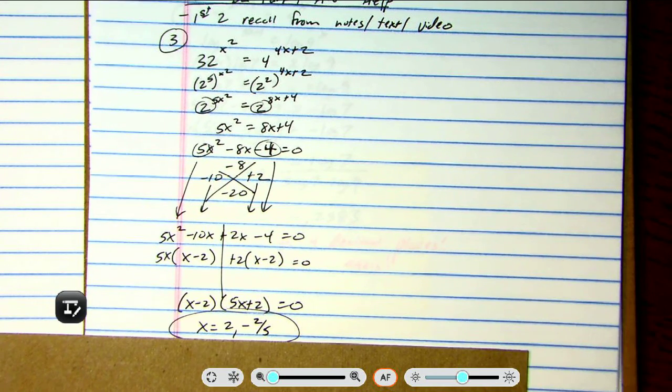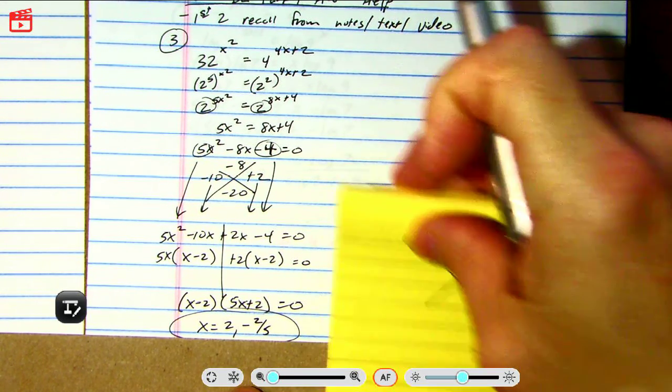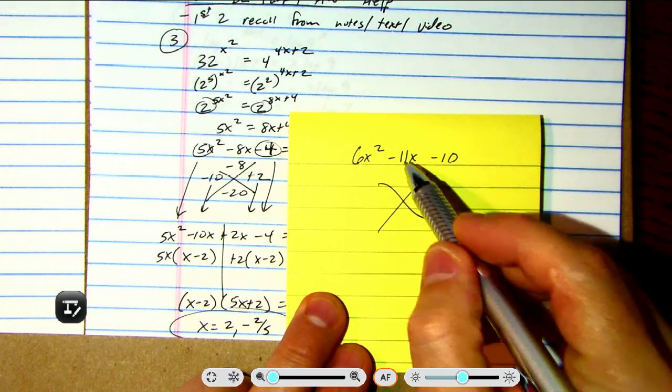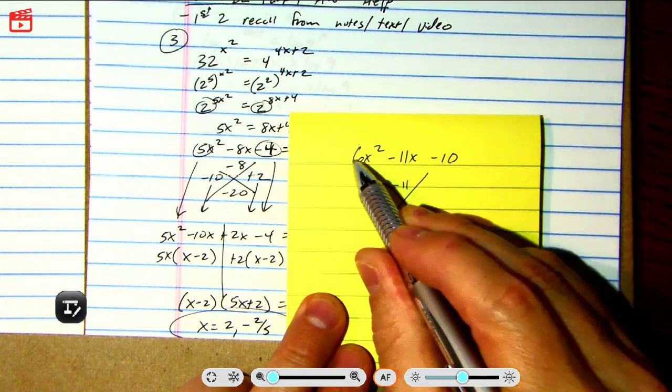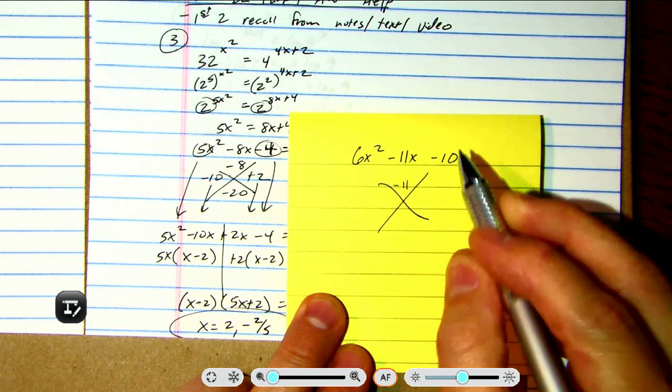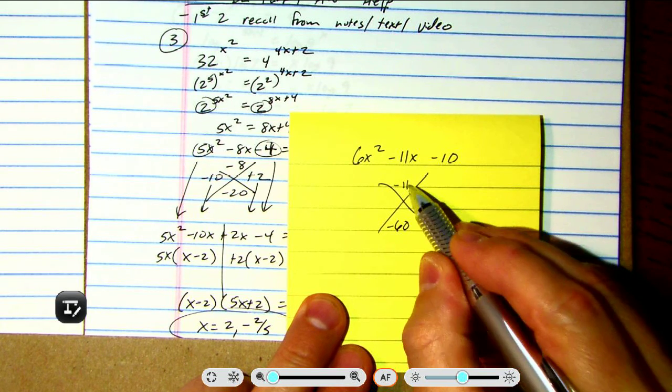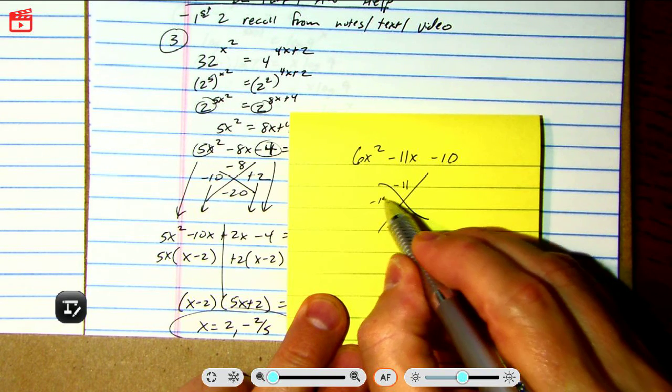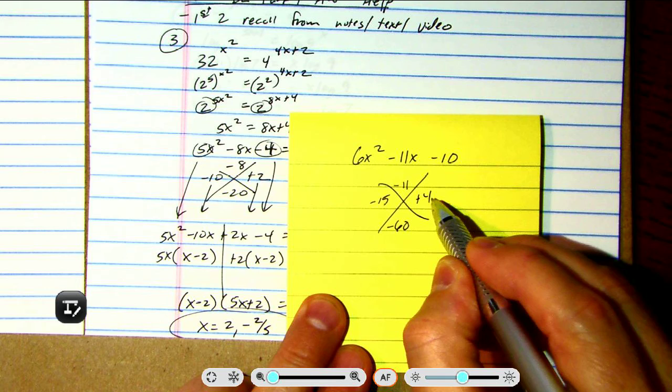I'm going to do that one more time live and in person so you can see it. Okay, let's factor this one. We drop the negative 11, multiply the 6 times negative 10, that's negative 60. What two numbers add up to this but multiply to this? Well, in this case, it's negative 15 and plus 4.